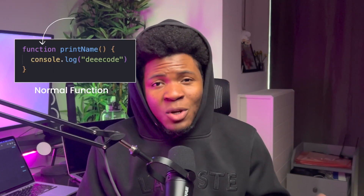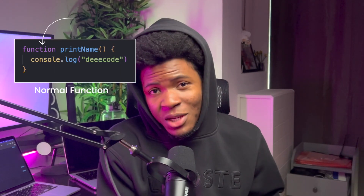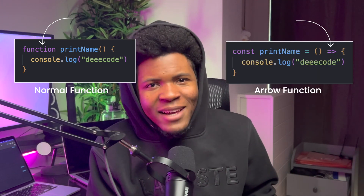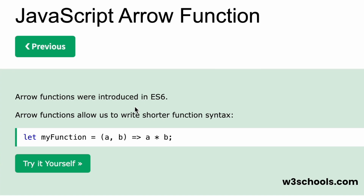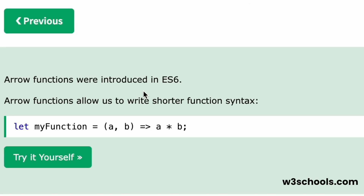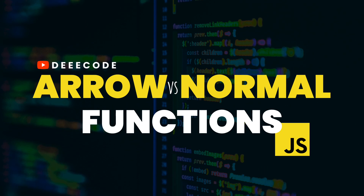In JavaScript, you have two types of functions. You have the normal functions created with a function keyword, and you have the arrow functions created with an arrow-like symbol. Arrow functions were introduced in ES6 and they allow you to write functions in a simple and easy way. But arrow functions have some differences when compared to normal functions, so using examples, let's look at some of those differences in this video.